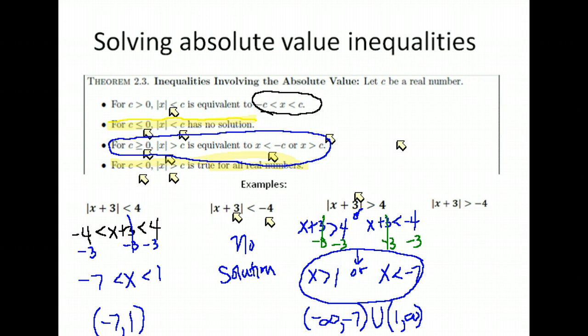Last example down here has the absolute value of x plus 3 greater than negative 4. Well, if you have an absolute value greater than a negative, that's going to happen every time because absolute values are 0 or positive. So this one is all real numbers. If we wrote that in interval notation, we would say it goes from negative infinity to infinity. We could put any number in there and get a correct solution.